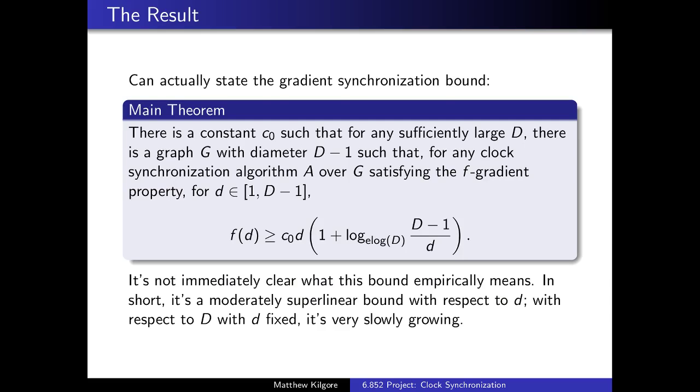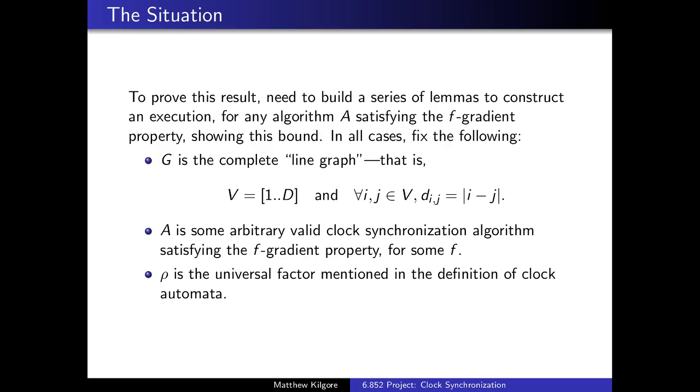Now, we're going to state the main result, which is that there is a constant C0 such that for any sufficiently large D, there is a graph G with diameter D minus 1, such that for any clock synchronization algorithm A over G satisfying the F gradient property, for D between 1 and D minus 1, F(D) is greater than or equal to C0 times rho times the quantity (1 + log base α(D) of (D-1)/D). Basically, it's a lower bound on the growth rate of F, and the log base α term makes it grow very slowly with D.